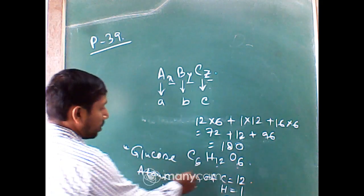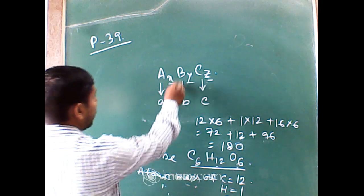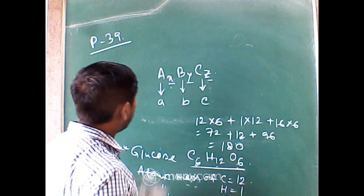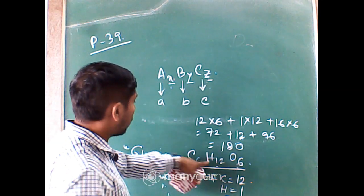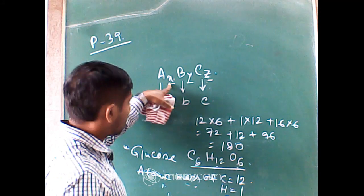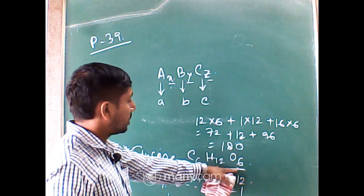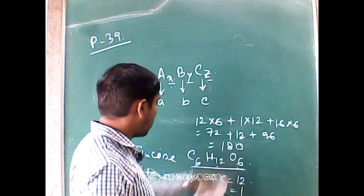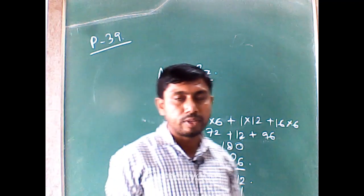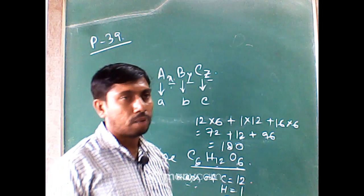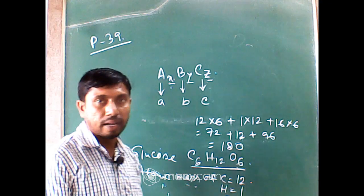Glucose has the formula C₆H₁₂O₆. Comparing with the general formula AₓBᵧCz, here A, B, C are carbon, hydrogen, and oxygen, x is 6, y is 12, and z is 6. By putting in the known atomic masses of the constituent elements, we can calculate the molecular mass.